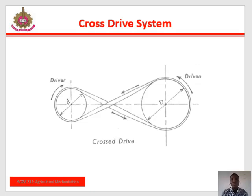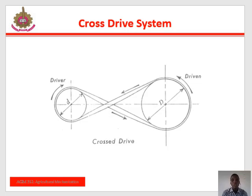The cross drive system is shown on the slide. The speed ratio in the cross drive system is the ratio of the two pulleys on the shaft of the motor and the machine to be driven. The speed ratio expression is given by the ratio of the speed of the driver to the speed of the driven, which equals the diameter of the driven to the diameter of the driver.